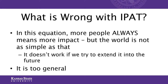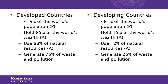The IPAT formula works well to explain past and current realities, but does not work well when we try to extend it into the future to predict impacts of population growth, consumption, and technology on the environment. IPAT assumes increased population always means greater environmental impact — which would suggest high-population countries have higher environmental impact than low-population countries. We know flat out this is not true.